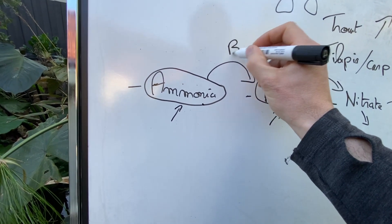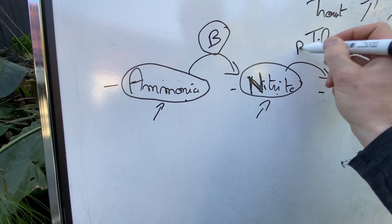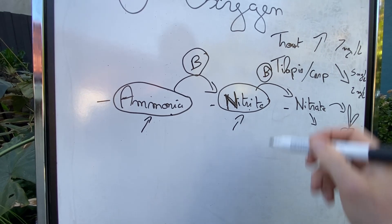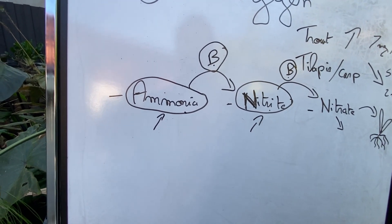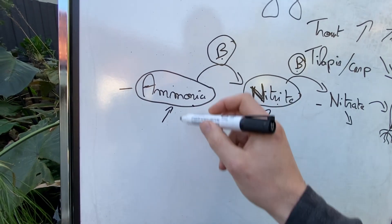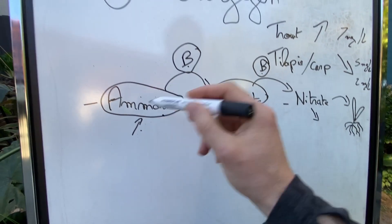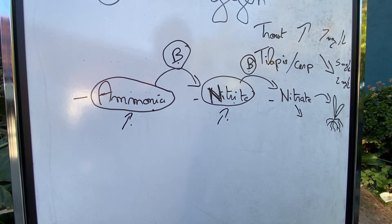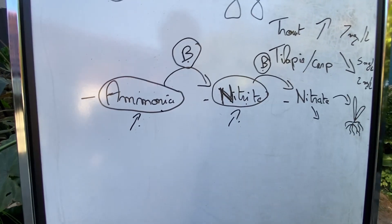The bacteria that are working here, nitrosomonas, and here, nitrobacter. Two different types of bacteria. Those two bacteria, if you don't have them in the good conditions, in the good quantity, your system is not going to work and this is going to increase or this is going to increase and this is definitely going to kill your fish. So if you don't understand aquaponics properly, and if you design an aquaponics system without a good knowledge, this is probably where you will lose your fish.